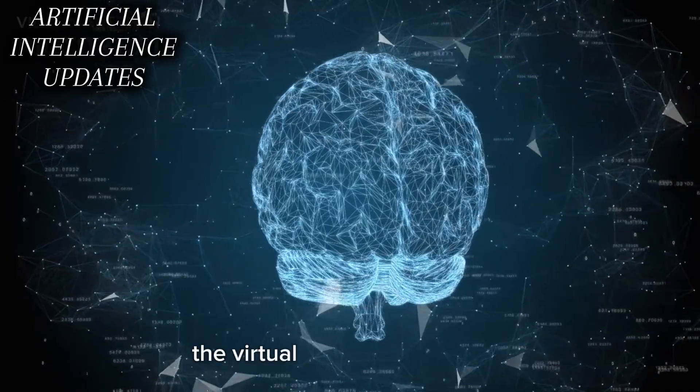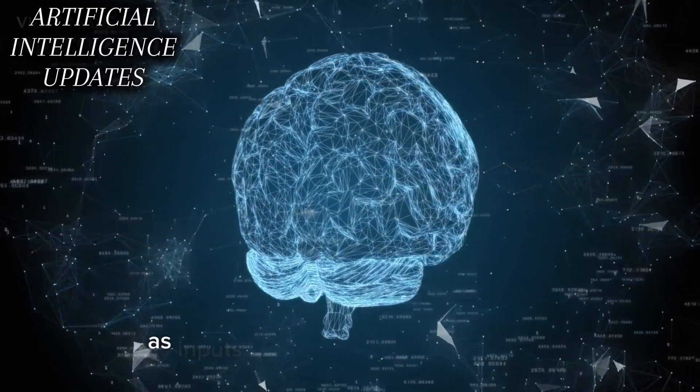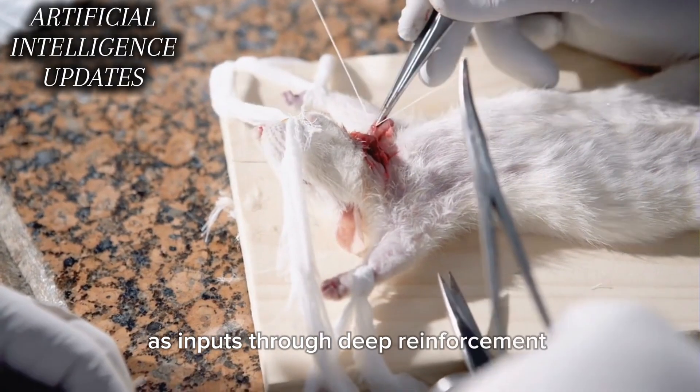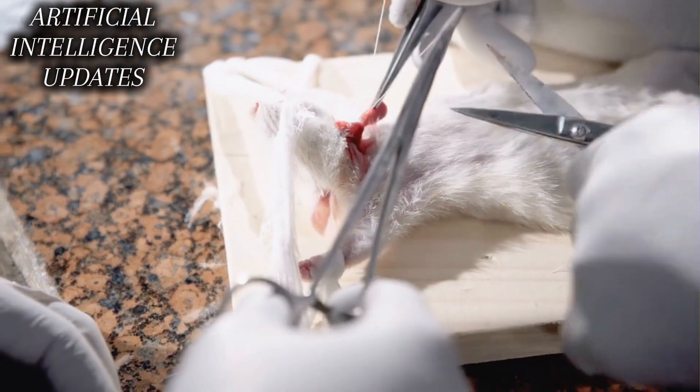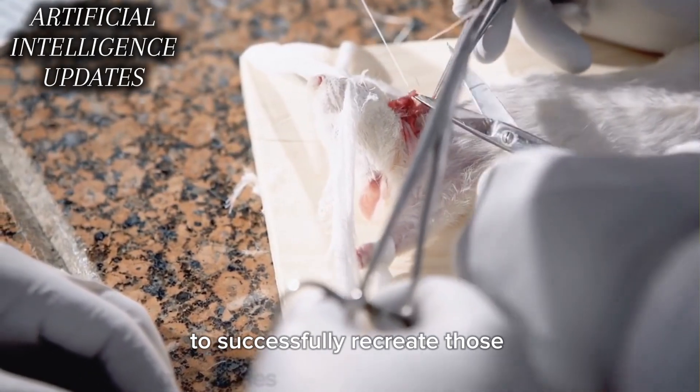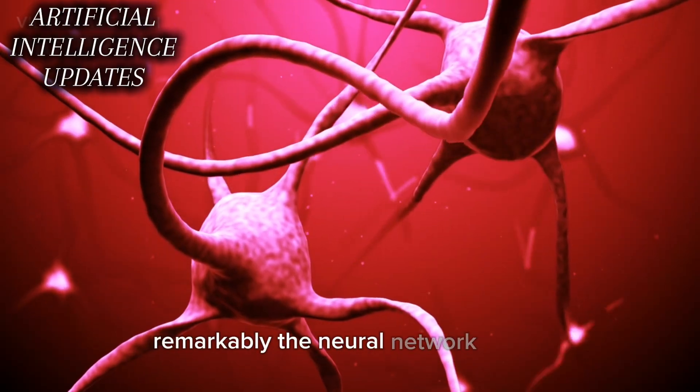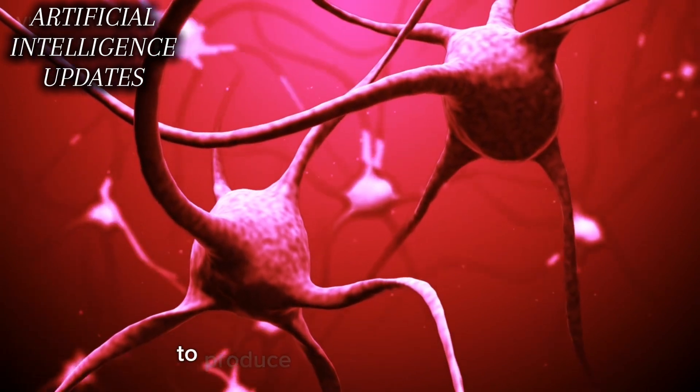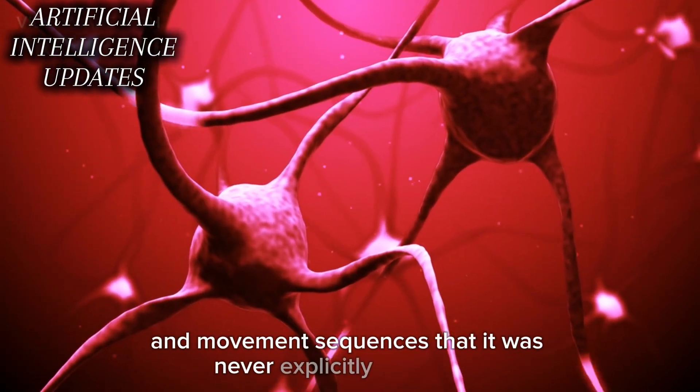The virtual rat's neural network was fed reference motion trajectories from the real rat data as inputs. Through deep reinforcement learning, it learned to output the precise pattern of forces that could use the body's joints and musculature to successfully recreate those trajectories in the physics simulation. Remarkably, the neural network could generalize what it learned to produce realistic rat behaviors and movement sequences that it was never explicitly trained on.